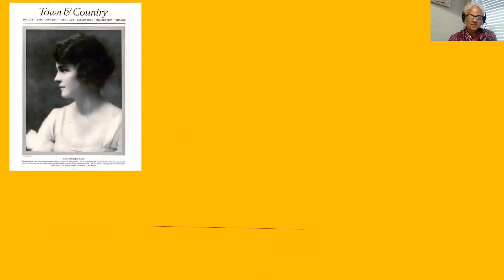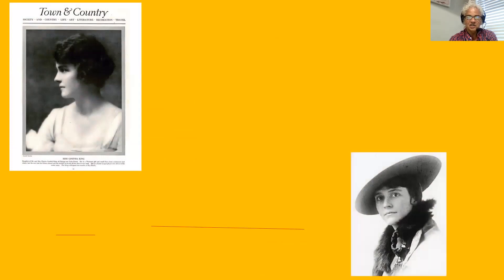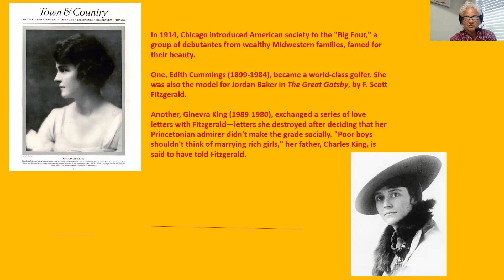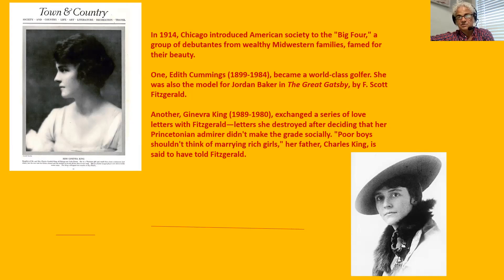Let's start with the biographical background. This is Ginevra King — F. Scott Fitzgerald's first serious girlfriend, around 1915–1916. She was from Lake Forest, Illinois. In 1918 she made the cover of Town and Country magazine. She was part of what Chicago called 'the Big Four,' a group of debutantes from the Midwest famous for their beauty. Later in life, Fitzgerald would write a series of short stories inspired by Ginevra King, called the Josephine stories.